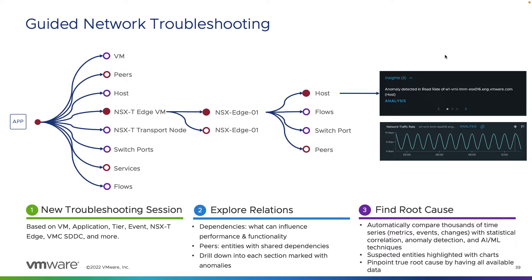Users then view the curated metrics and data to gain deep insight and find the root cause sooner. Basically, the complexity is simplified to a mind map of network and application-aware dependencies. Knowledge of what is abnormal and the data supporting the anomaly is displayed, and time to insight is significantly reduced as a byproduct of the reduced complexity.